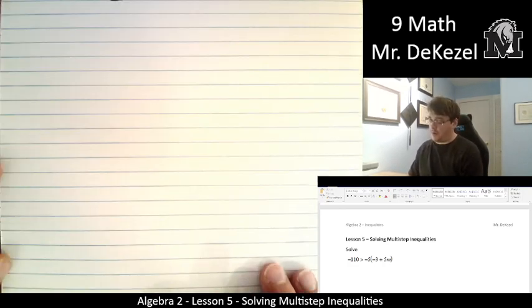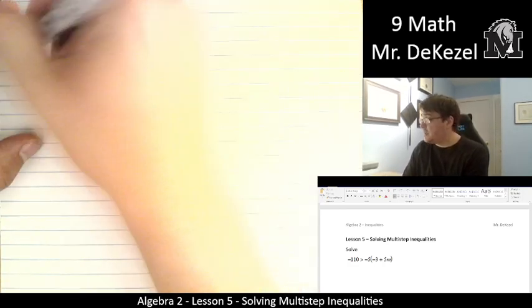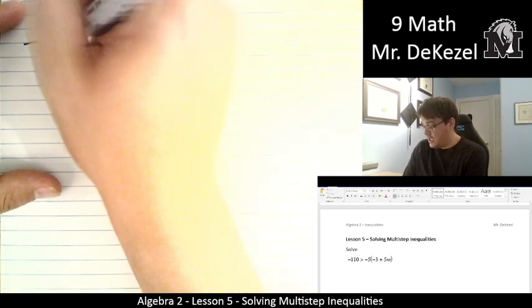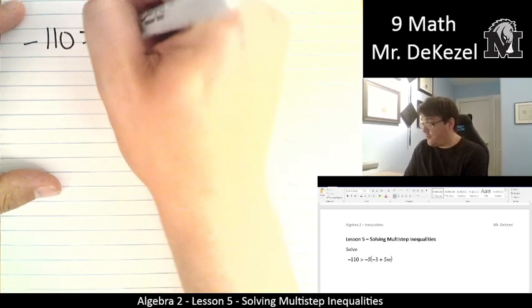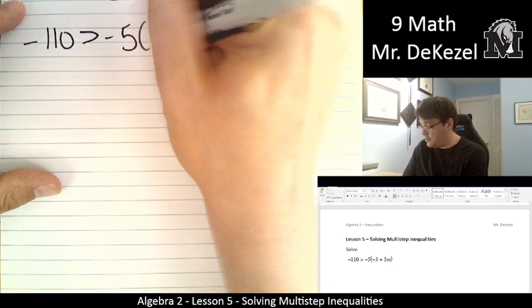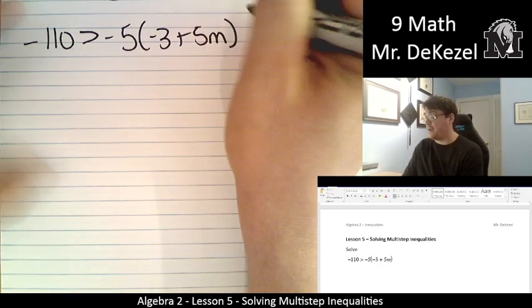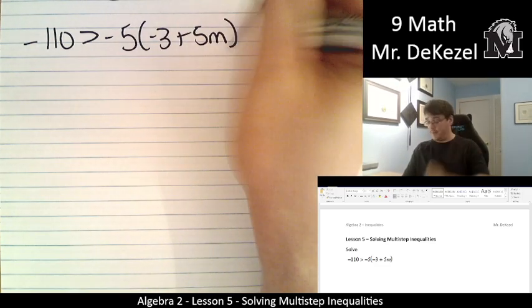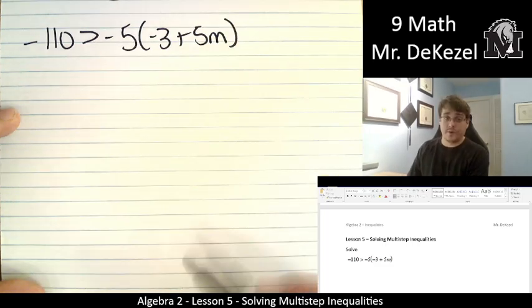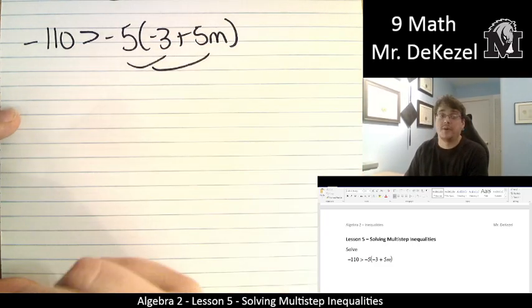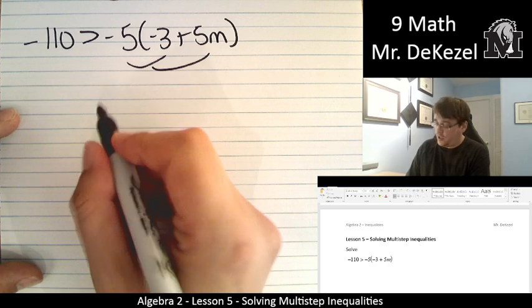We have three problems to do here. We have minus 110 is greater than minus 5 times minus 3 plus 5m in brackets. We're going to be solving for m, isolating for m. We've got to get rid of these brackets. So we're going to use the distributive property to multiply the minus 5 through.